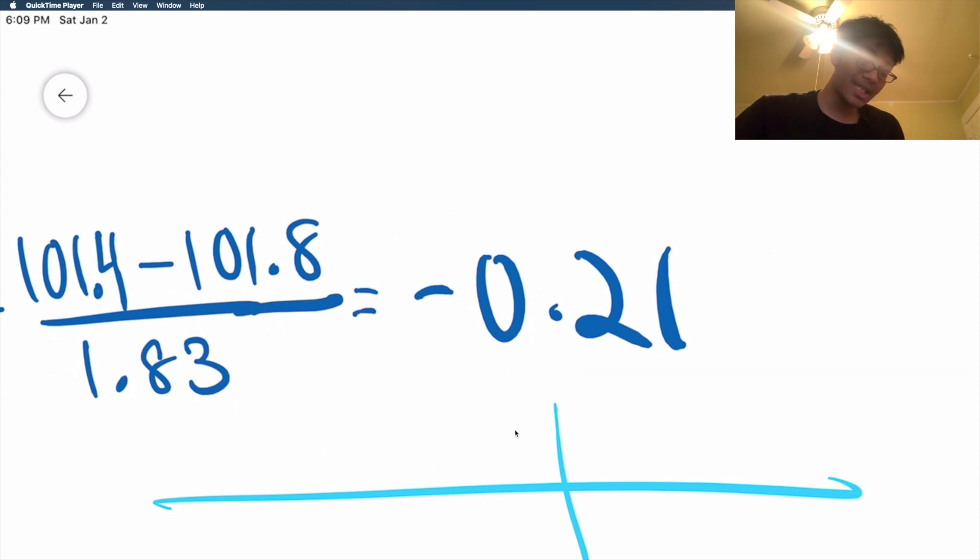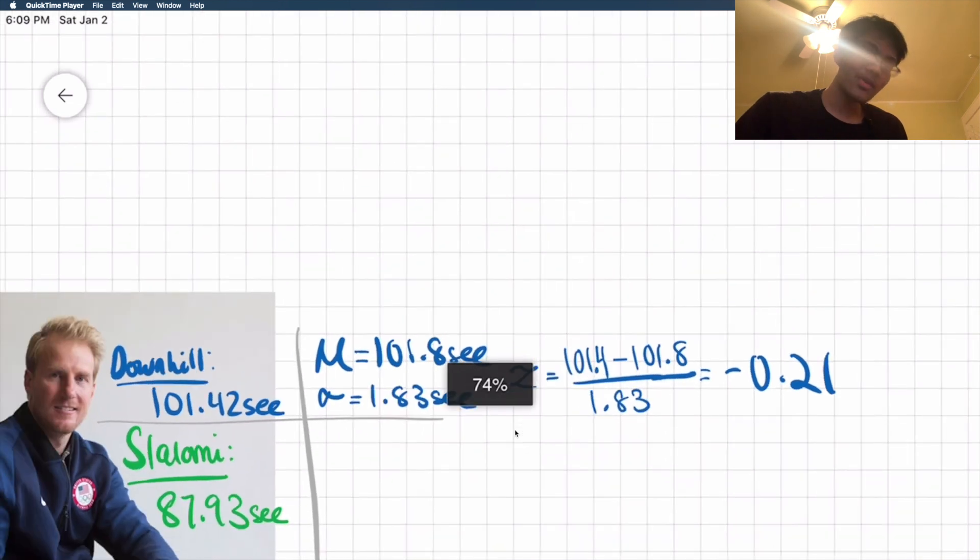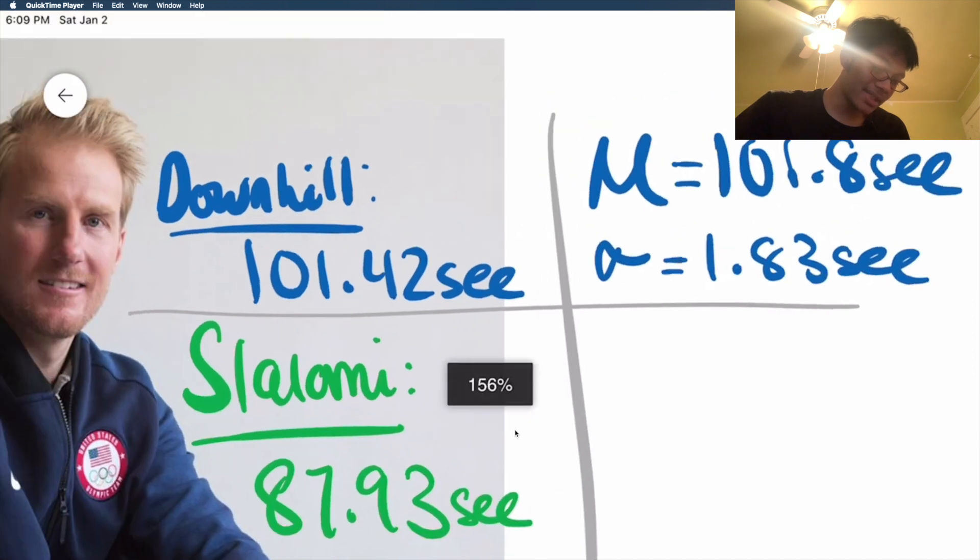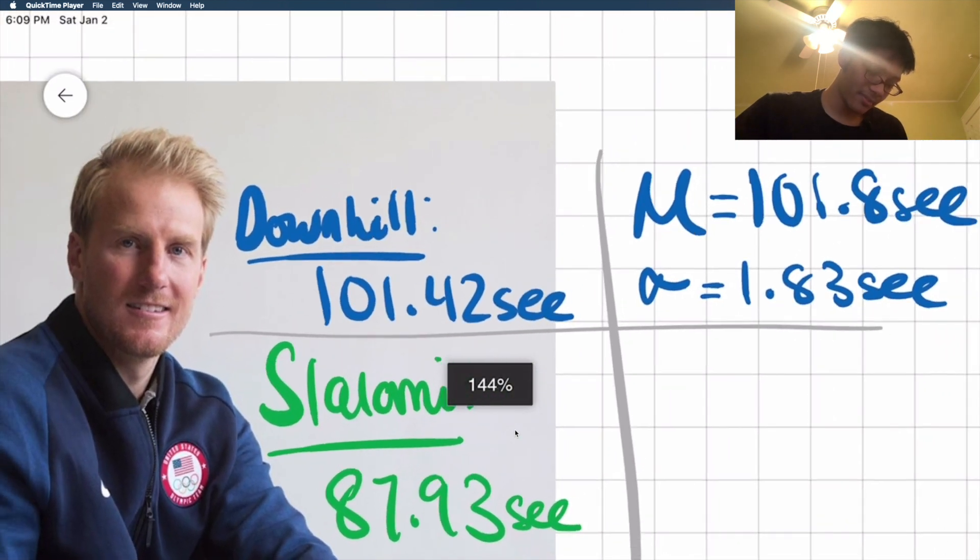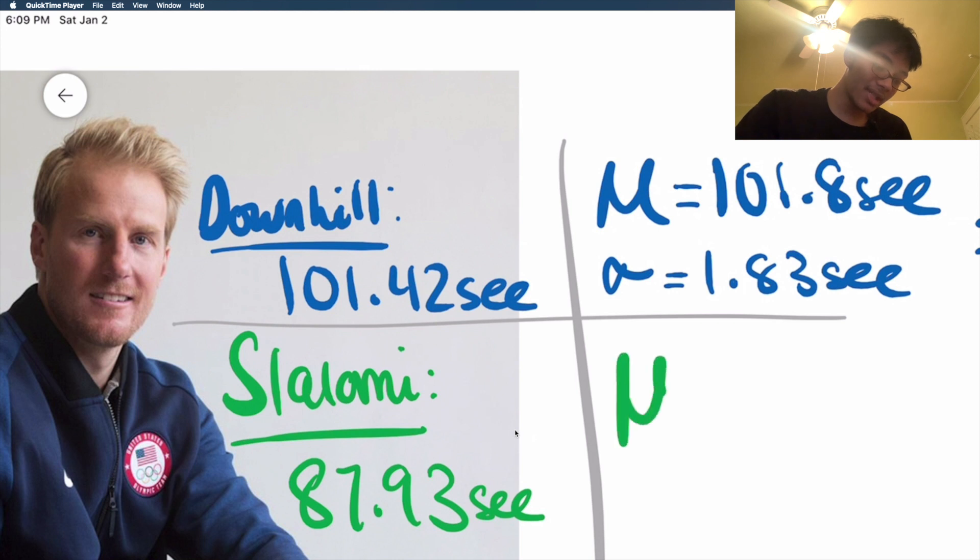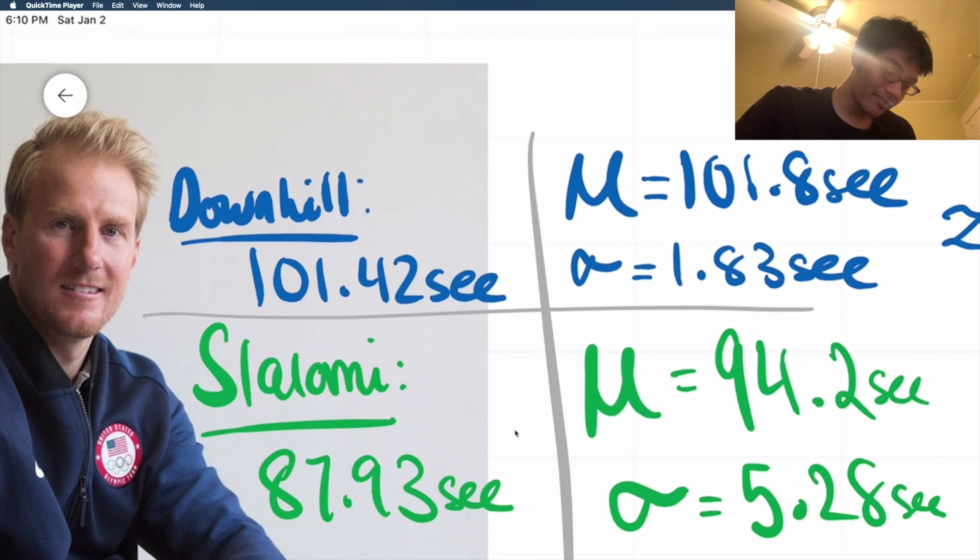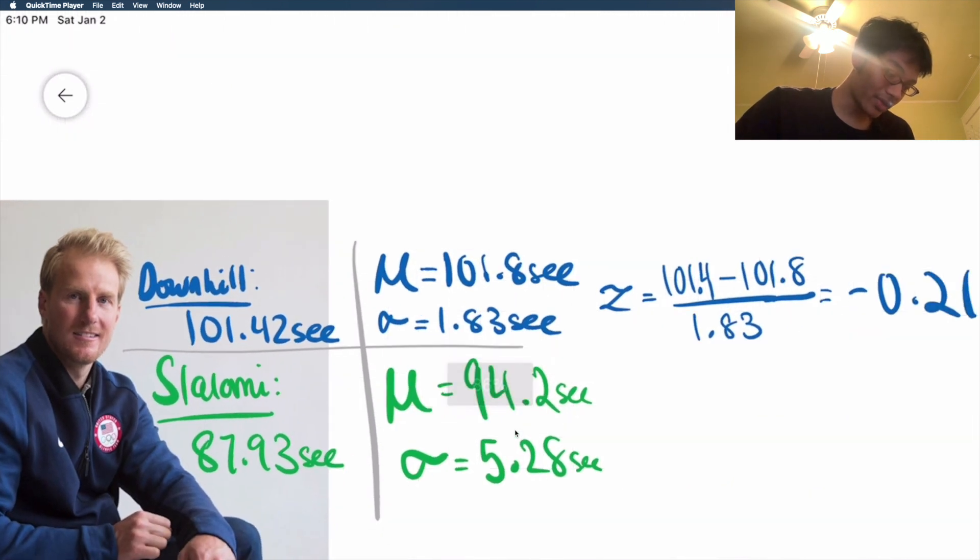But let's see which sport Ted is better in. Is he better in downhill racing or the Slalomi? Well, to answer that question, let's go ahead and calculate Ted's z-score for the Slalomi. To calculate the z-score, we need the mean and the standard deviation. What's our mean going to be? Well, it's going to be 94.2 seconds for his average competitor. And the standard deviation for his competitors is going to be 5.28 seconds.